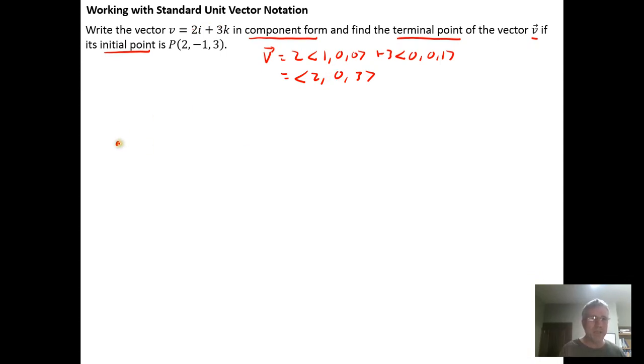We're given the initial point for a vector. Here's the point p, p is this point right here, (2, -1, 3). And we don't know the terminal point. We don't know the point (x, y, z) that is the terminal point for this vector.